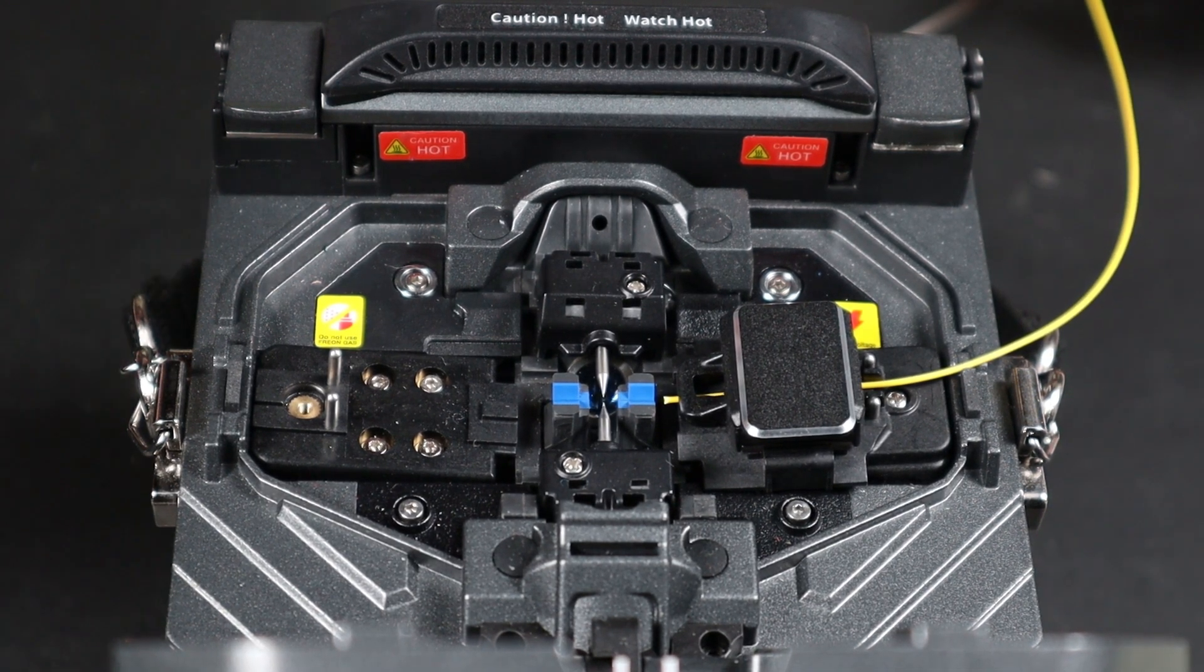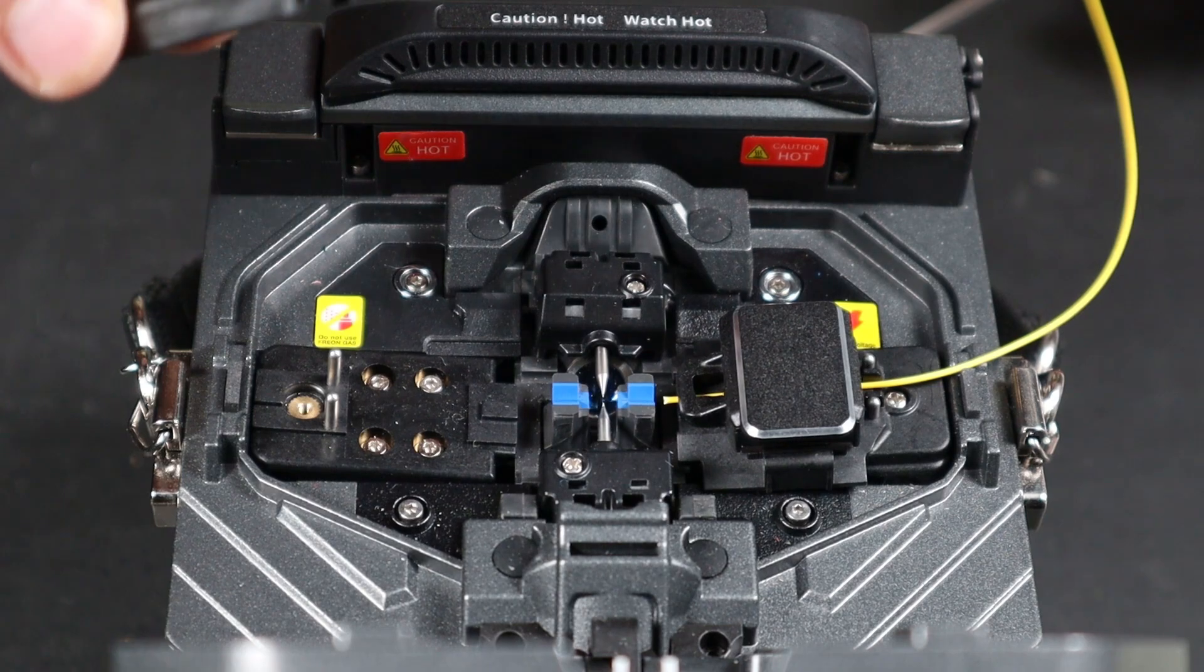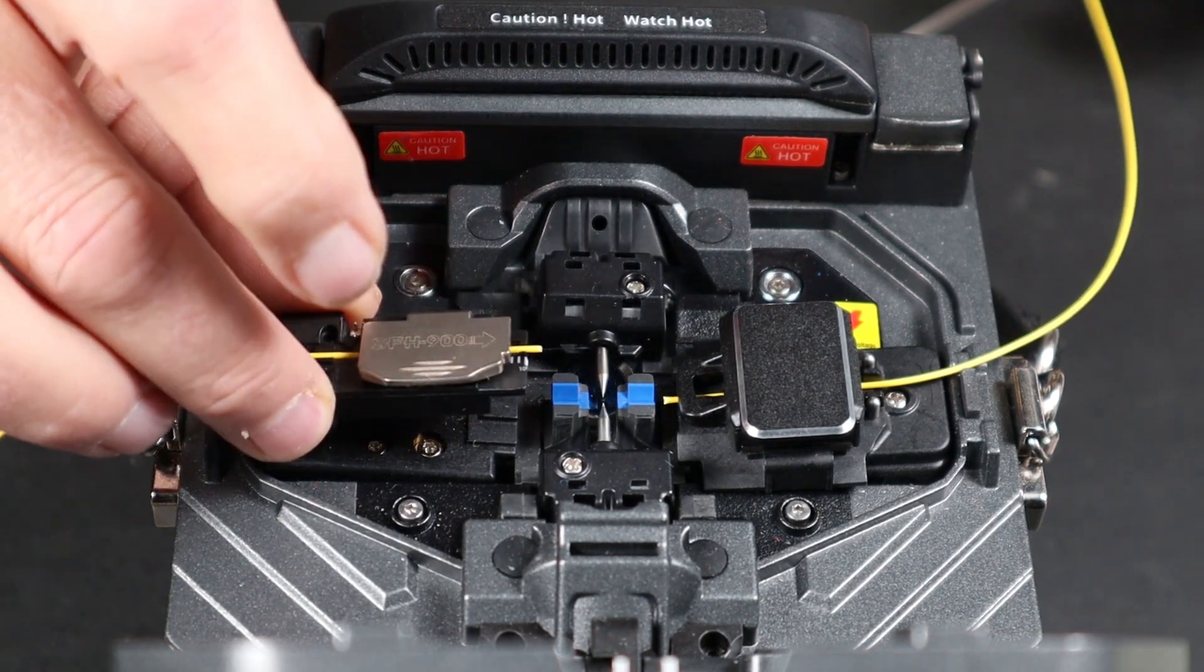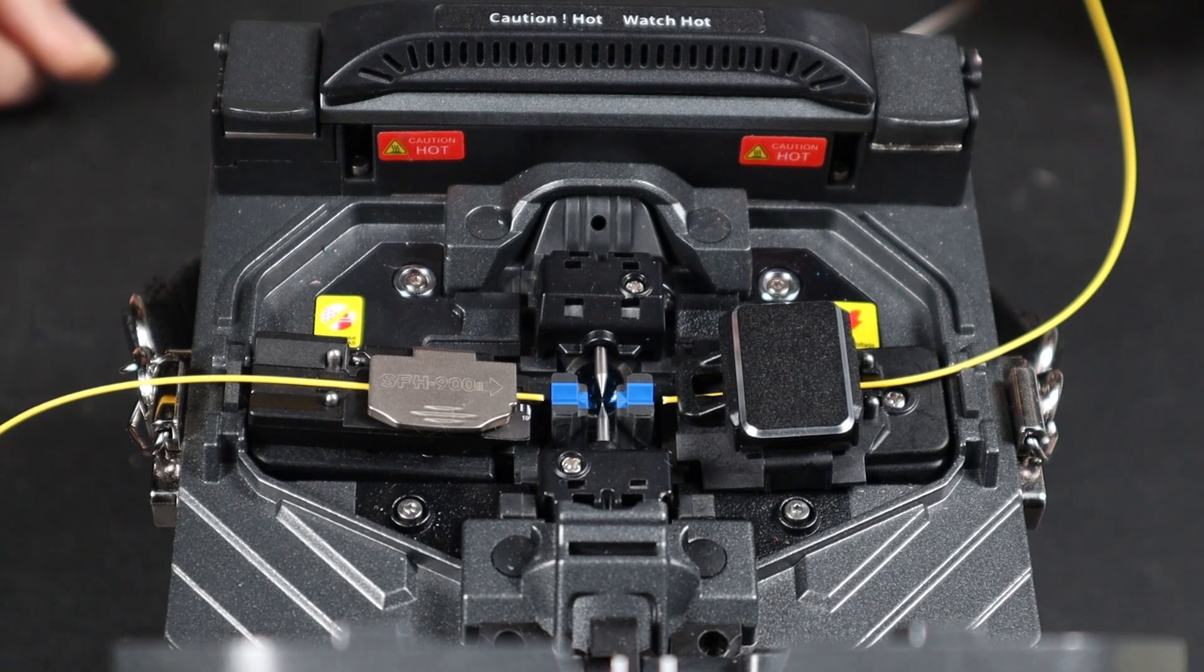For the movable holder, everything is already prepared. You take and you just place it in your splicer.